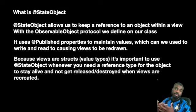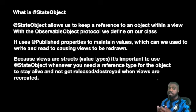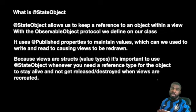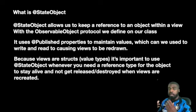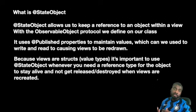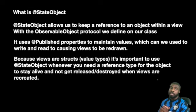Now why do we do this? Views in SwiftUI are structs. If you don't know the difference between a struct and a class: a class is a reference type, meaning once you've created it, it stays in memory and you can reference it later. Structs are value types — whenever you make a change to a struct, it creates a copy, a new version of itself. Without the @StateObject property wrapper, if you had a view model and changed a property in it, whenever your struct gets re-invalidated and redrawn, that change would be gone. StateObject allows us to essentially use a reference type within a SwiftUI view.